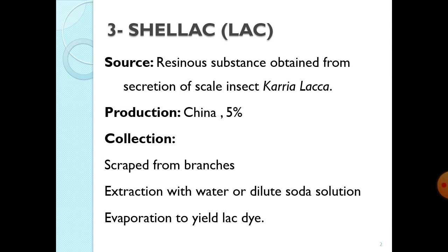Shellac is also known as lac. Its source is a resinous substance obtained from the secretion of scale insects, Caria lacca. Shellac is basically a resinous substance — resins are complex organic compounds, and normally amorphous or shiny structures are obtained from them.